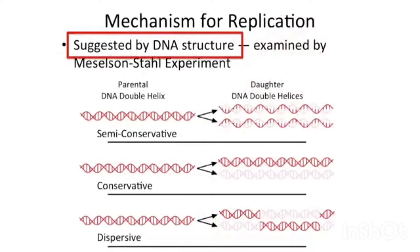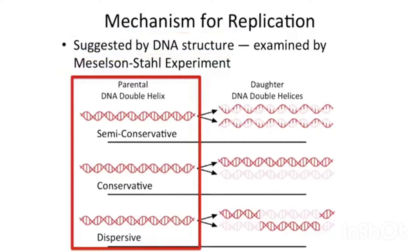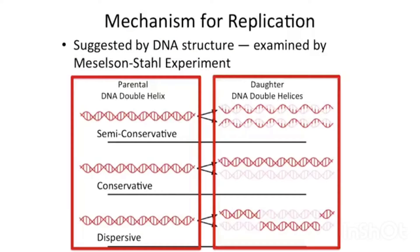That is, one strand could serve as the template for another. But skepticism remained, without direct evidence, about whether or not this was the mechanism that cells actually used. This question was addressed by the Meselson and Stahl experiment in 1958. These researchers proposed three mechanisms by which you could get two daughter strands that have the same sequence as the parent.